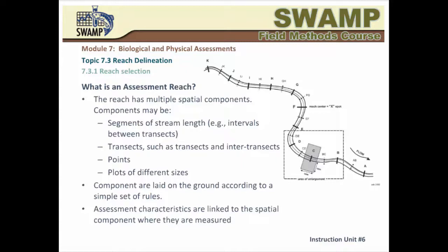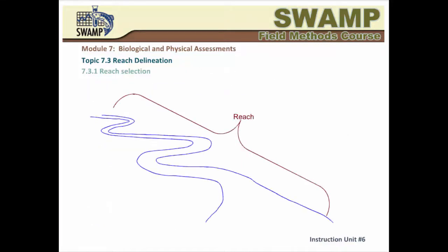Each component has a unique ID and can be easily mapped to the reach based on a simple set of rules. Each reach is divided into ten equal parts delineated by eleven transects, so the distance between transects is one tenth of the reach length. An inter-transect is placed halfway between two adjacent transects. The wetted channel at each transect and inter-transect is divided into four equal parts, and the five points surrounding them — two on the right bank and two on the left bank — are used for assessment.